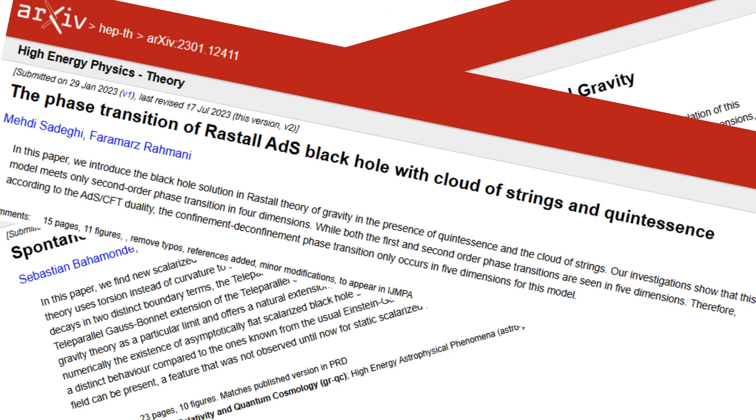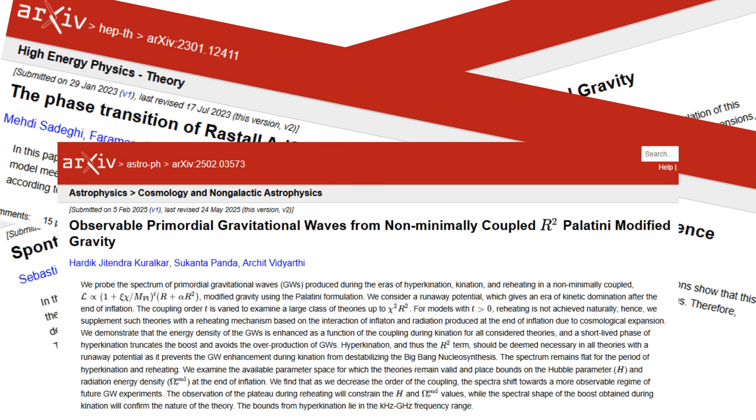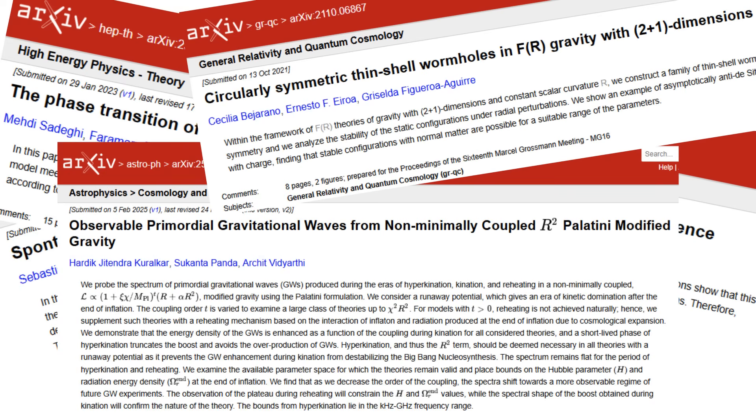The phase transition of Rastall anti-de Sitter black hole with cloud of strings and quintessence. Observable primordial gravitational waves from non-minimally coupled R2-Palatini modified gravity. Circularly symmetric thin-shell wormholes in f of r gravity with 2 plus 1 dimensions.